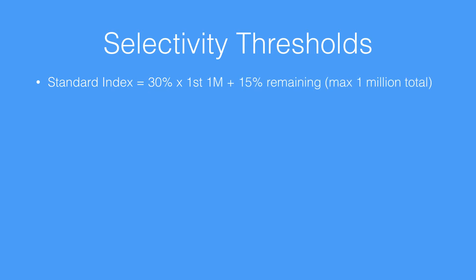There's a series of thresholds that have been put in place around this. When you're working with a standard index filter, the threshold is that the filter must retrieve less than 30% of the first 1 million records — so 300,000 — and up to and less than 15% of the remaining records, with a total of 1 million records overall.